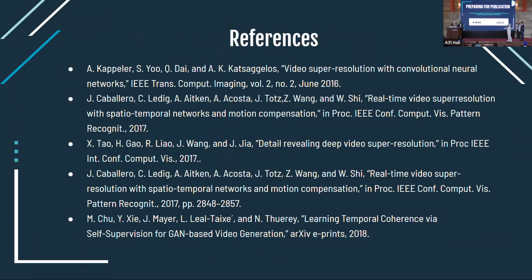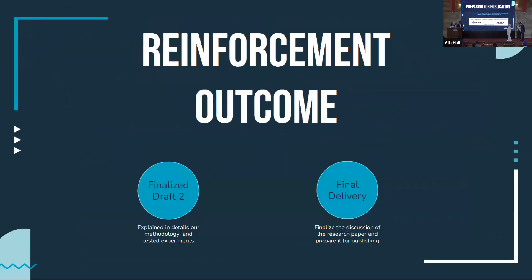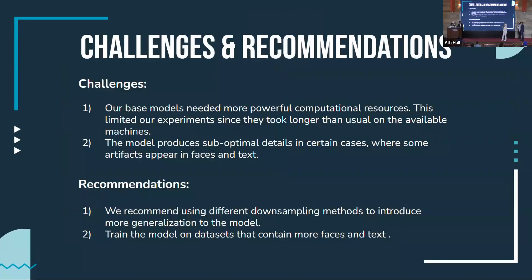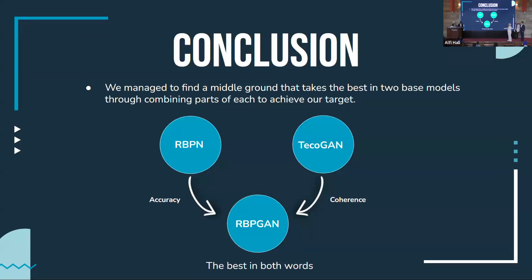Moving to final remarks, we faced some challenges. First, we needed more powerful computational resources to conduct our tests because we used GAN networks. Second, we introduced suboptimal details in cases with more complex content or artifacts. To address this, we recommend using different downsampling techniques that introduce more generality and more domains into the test set, and also training on models that include more faces and text. In conclusion, we are proud to have achieved our hypothesis by finding the middle ground that exceeds the state of the art in temporal coherence, while also slightly increasing accuracy with reduced models.